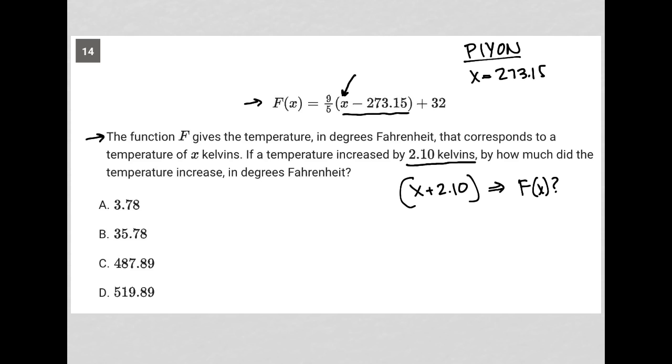Hopefully you can see the logic in that. By plugging 273.15 in, I will get 0 here. 273.15 minus 273.15 all become 0. 9 fifths times 0 remain 0. So basically, I'll have this scenario.